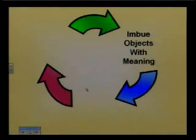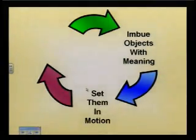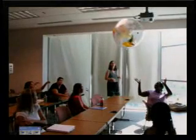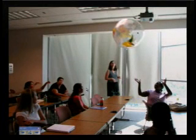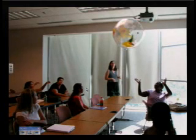This next graphic illustrates how that's accomplished. You imbue objects with meaning — in this case, the little red ball means you have permission to speak. You set them in motion, throw it about the class, and the person it's thrown to has the opportunity to speak. Another great example: in a geography class, the teacher assigns a semester-long project where whatever country or region a beach ball globe lands on — under the student's right thumb — is the subject they'll research and present on at the end of the semester.